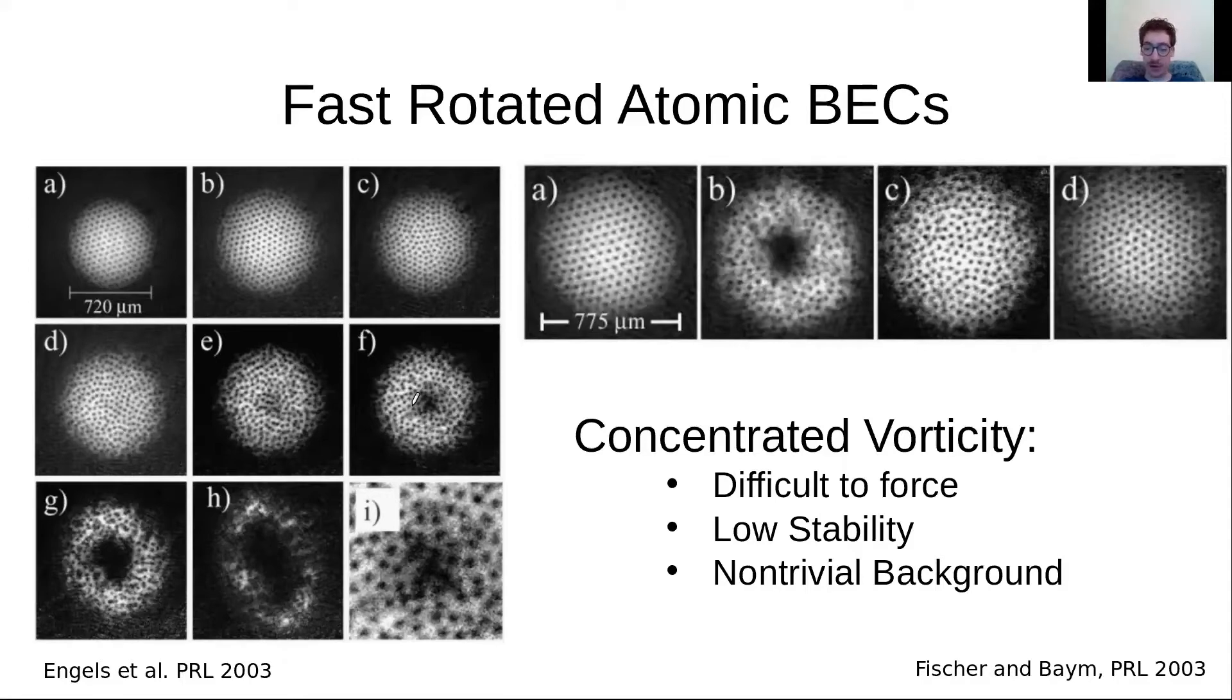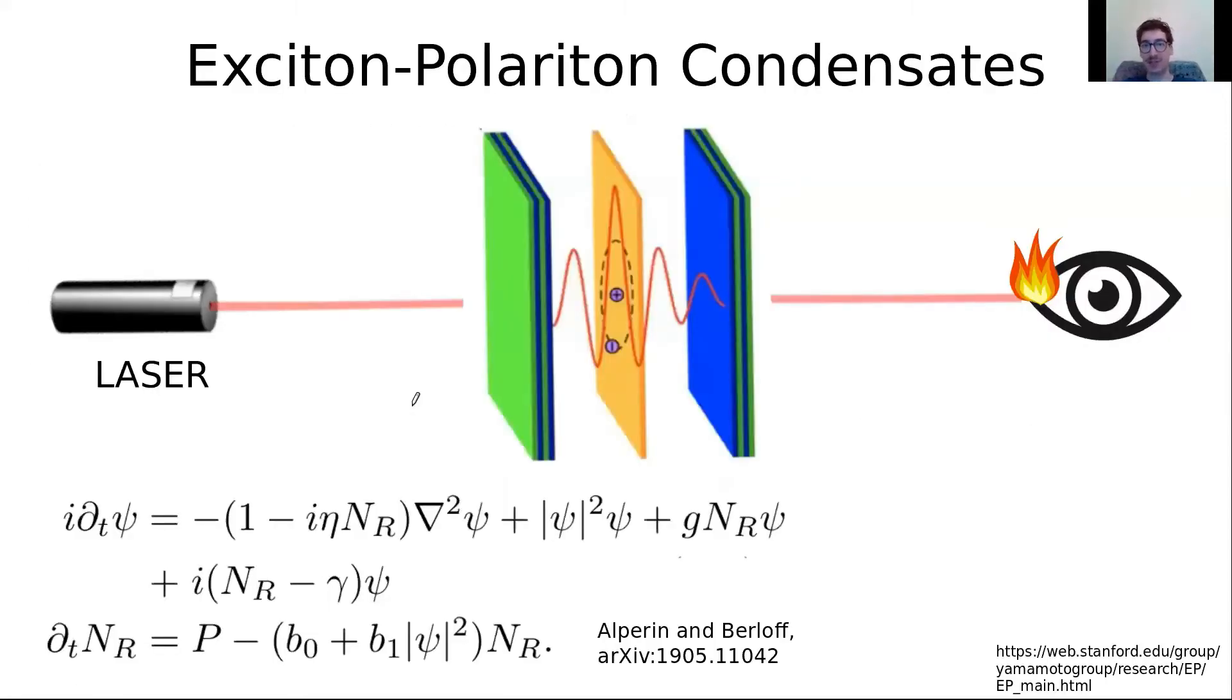I'm not going to talk too much about exciton-polariton condensation itself because I think we're mostly well versed and there are going to be enough talks on it. But I do want to introduce our model, which is a complex Ginzburg-Landau equation for wave function ψ coupled to a reservoir representing the uncondensed particles. I want to stress that in the system we always have some input—a pump laser beam which can take on any profile—and we always have some leakage of photons, so there's always some loss term γ.